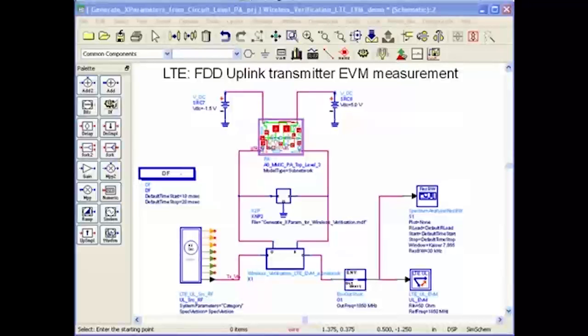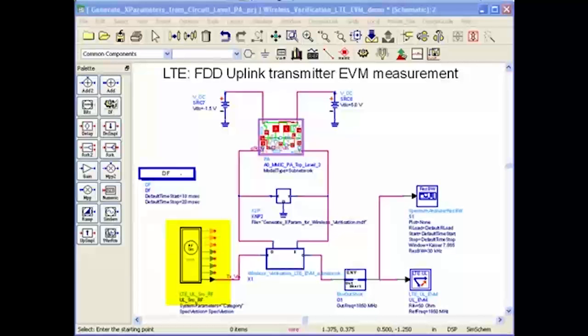Determining these wireless specs in ADS is very easy. All you have to do is insert either the circuit level PA or the X parameter model into this test bench and click on the simulate button. This test bench has an LTE source identical to Agilent's signal studio for LTE application that you use in the lab. The source excites the device under test and outputs the wireless spec measures that you specify.